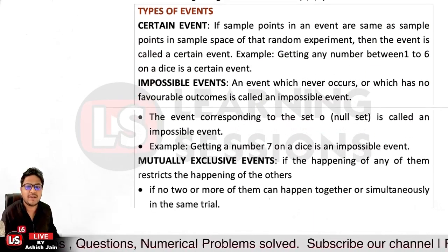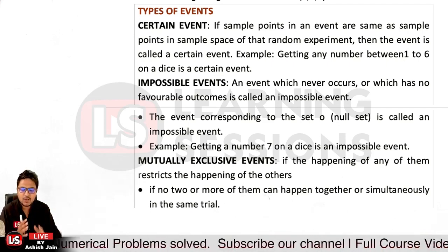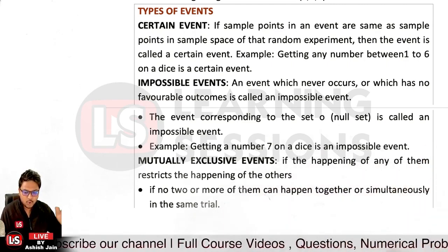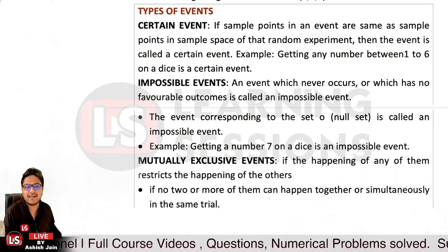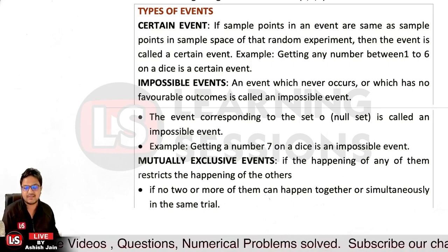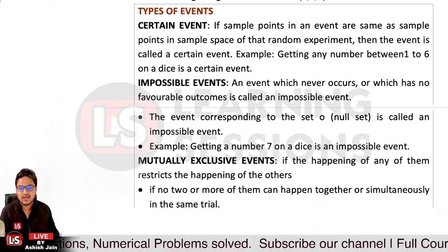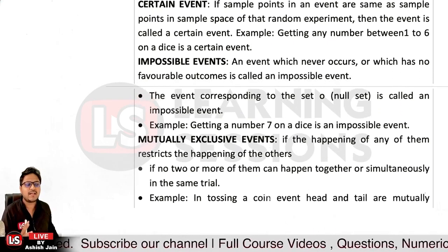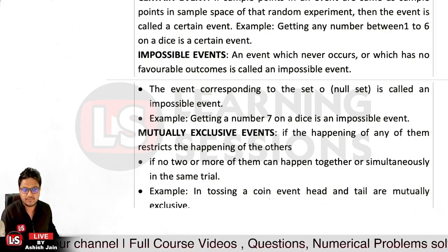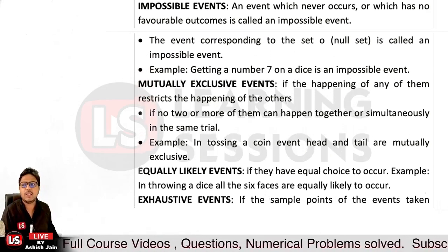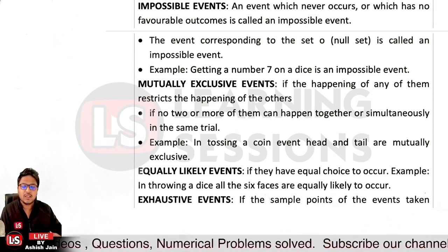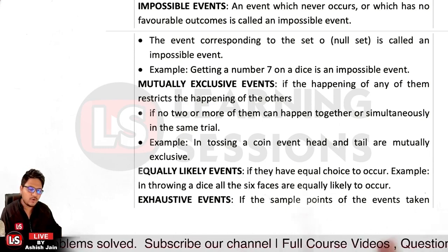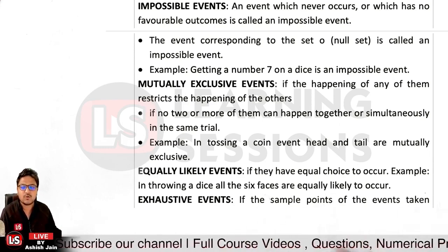Mutually exclusive events are events where the happening of one restricts the happening of the other — those two things cannot occur simultaneously in the same trial. For example, when tossing a coin, you cannot get both head and tail in the same event. So head and tail are mutually exclusive events.